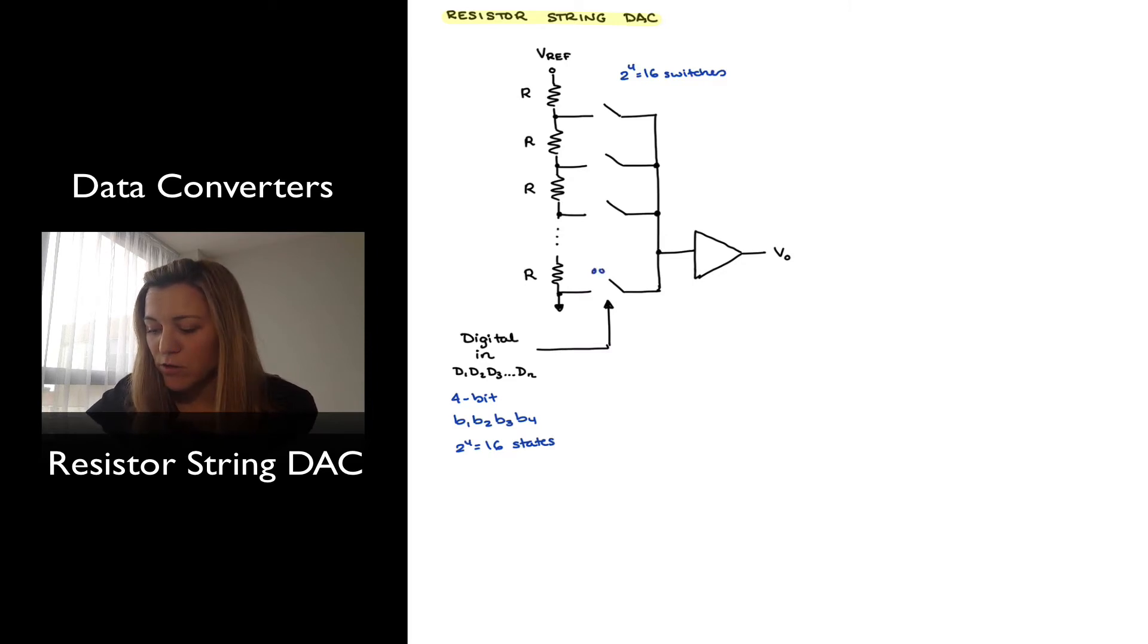So maybe this switch will be closed for a value of 0000. Then this one will be open for a value of 1101, and 1111. And basically depending on which switch is closed, the voltage will be tapped at a particular point, and so that will control how much my output voltage will be. That output voltage will be then run through a buffer and just put out at the output.